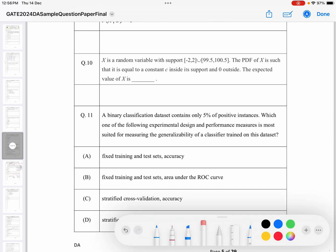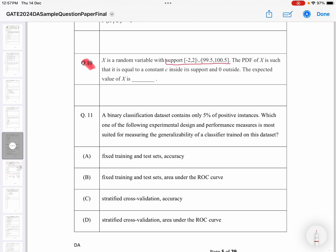Okay, let's try to do this question number 10. Today we will be doing question number 10. Again, this is from probability, from random variable. What we have given is that X is a random variable with support [-2,2] ∪ [99.5,100.5]. You will have to know about what we call the support. The PDF of X is such that it is equal to a constant C inside the support and 0 outside. The expected value of X is to be found.